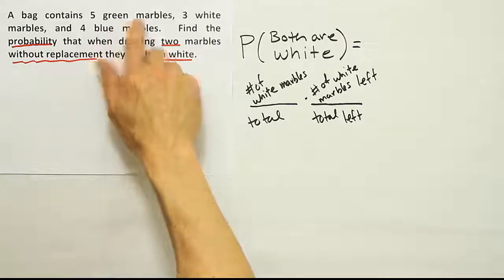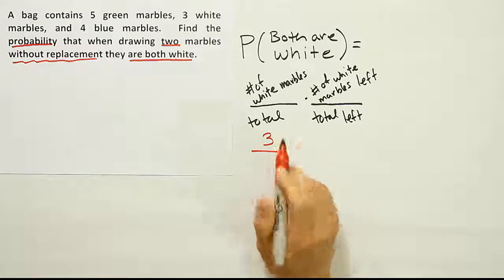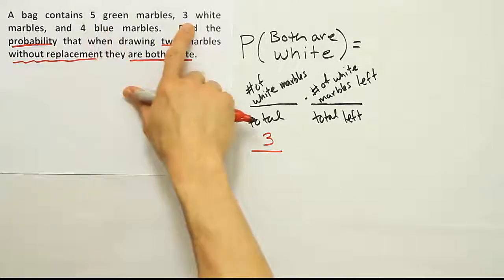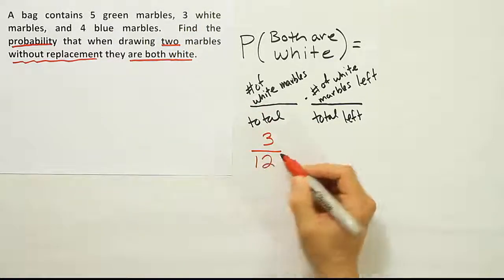Well, the bag initially contains five green, three white, and four blue. So I'm going to assume initially when I first go in there, there are exactly three white marbles out of a total of, well, five and four make nine, and then three more make twelve. So a total of twelve marbles in the bag.